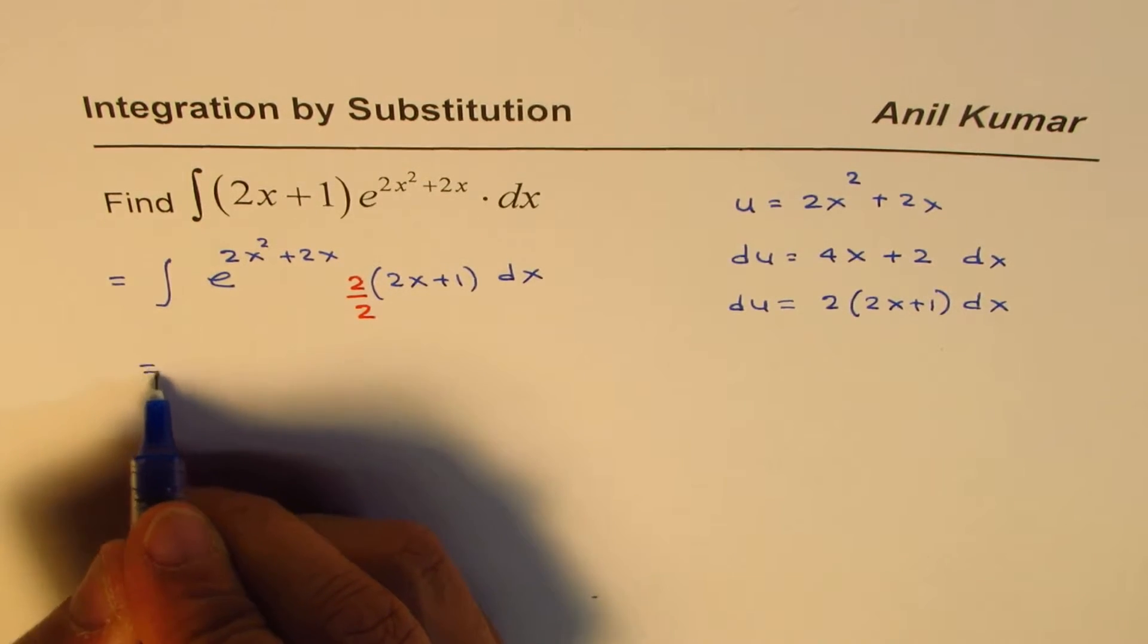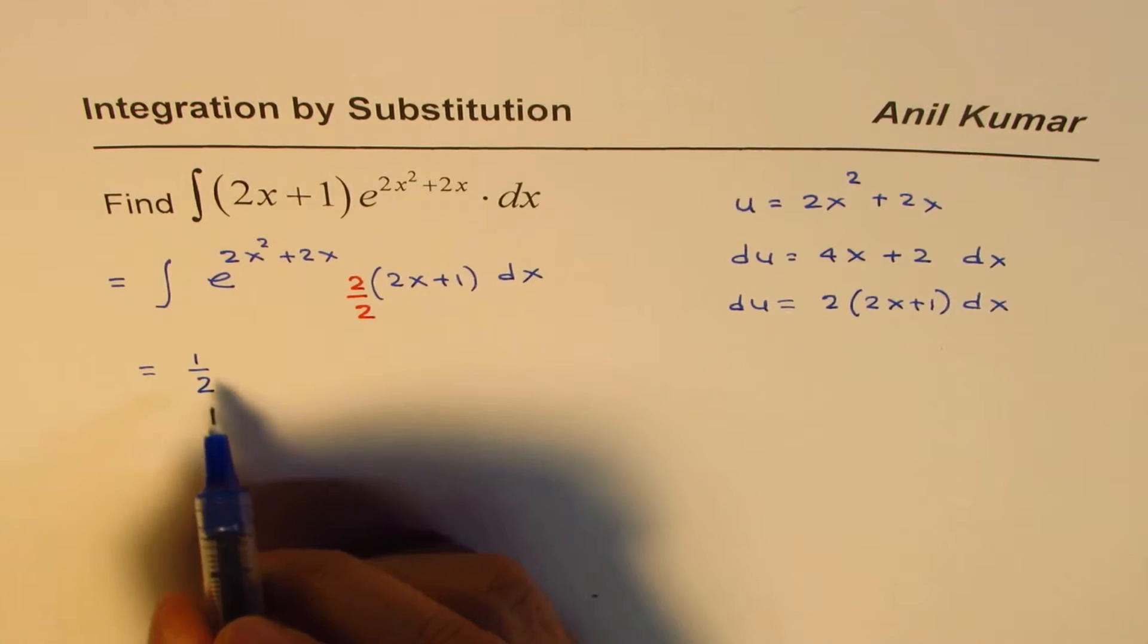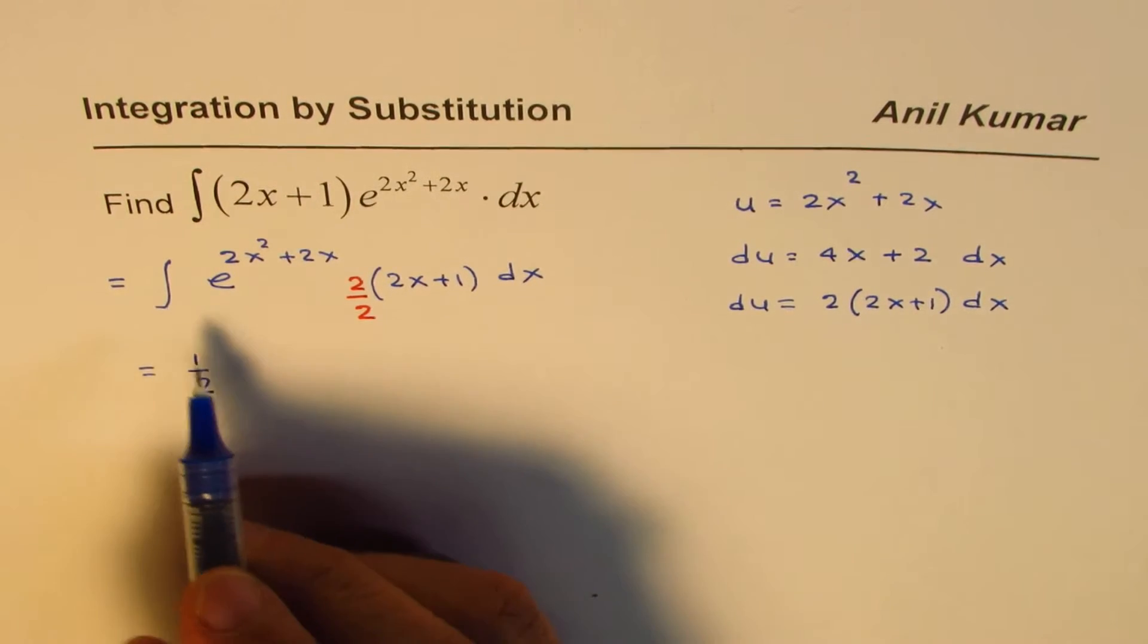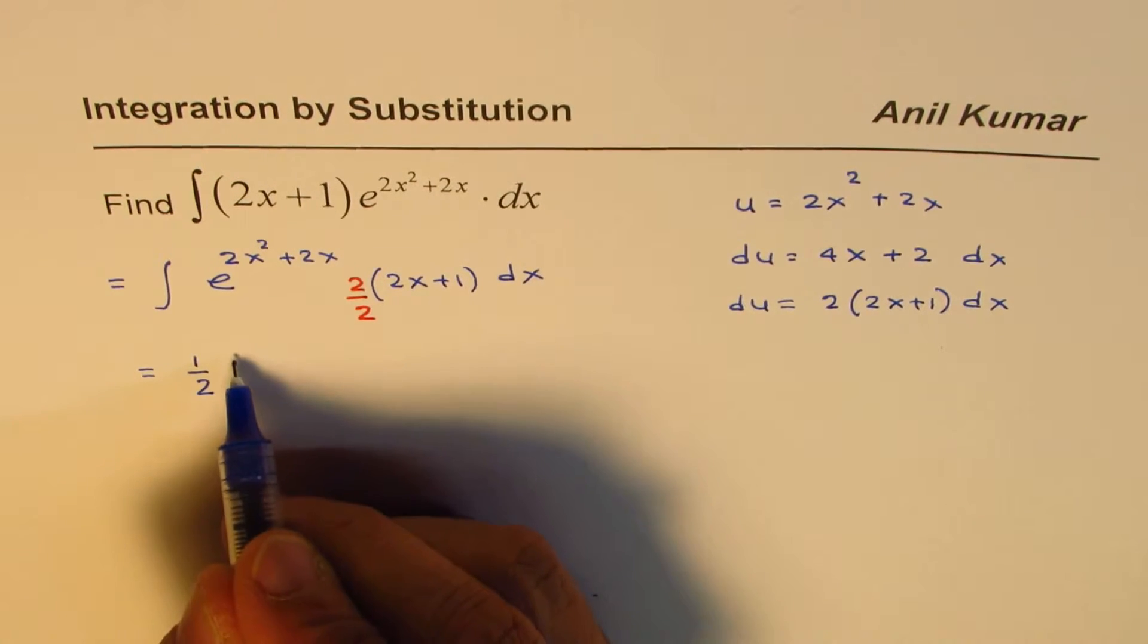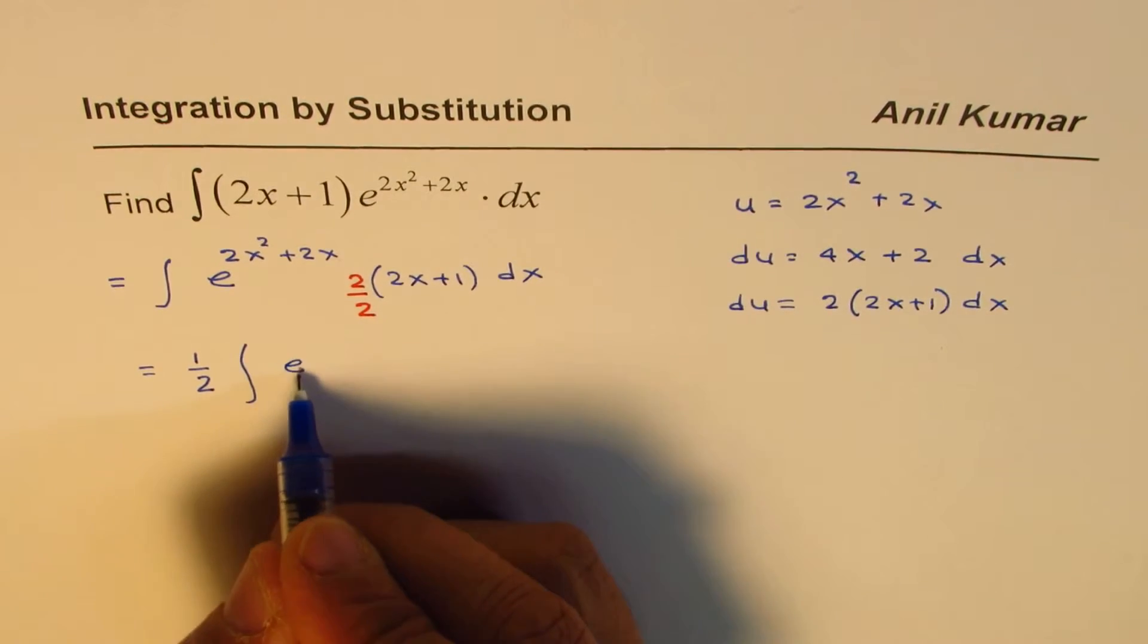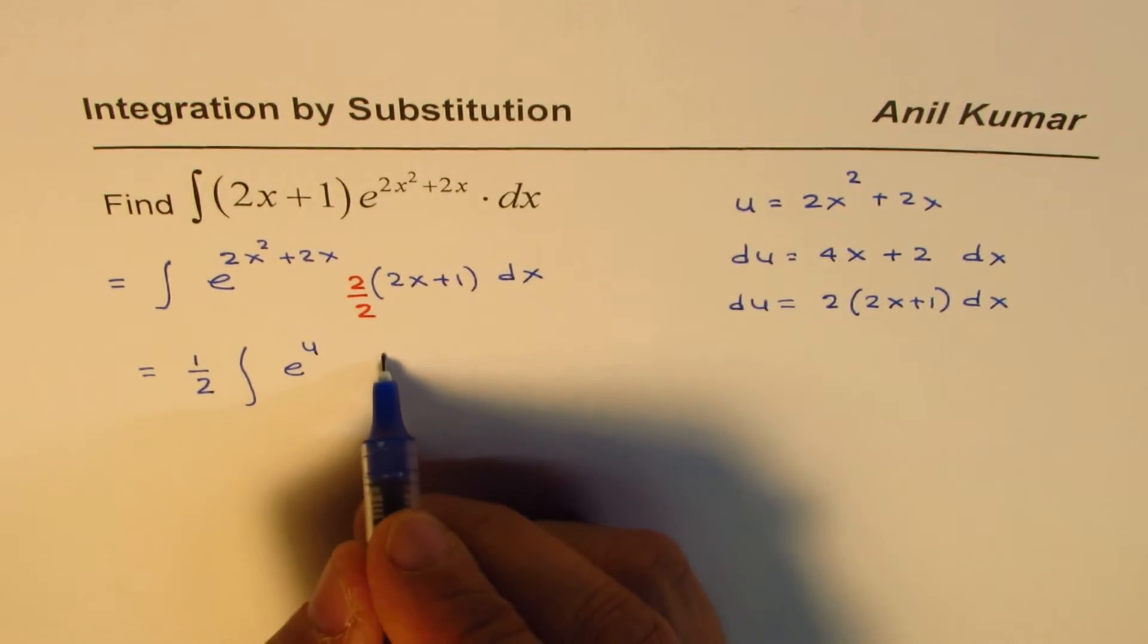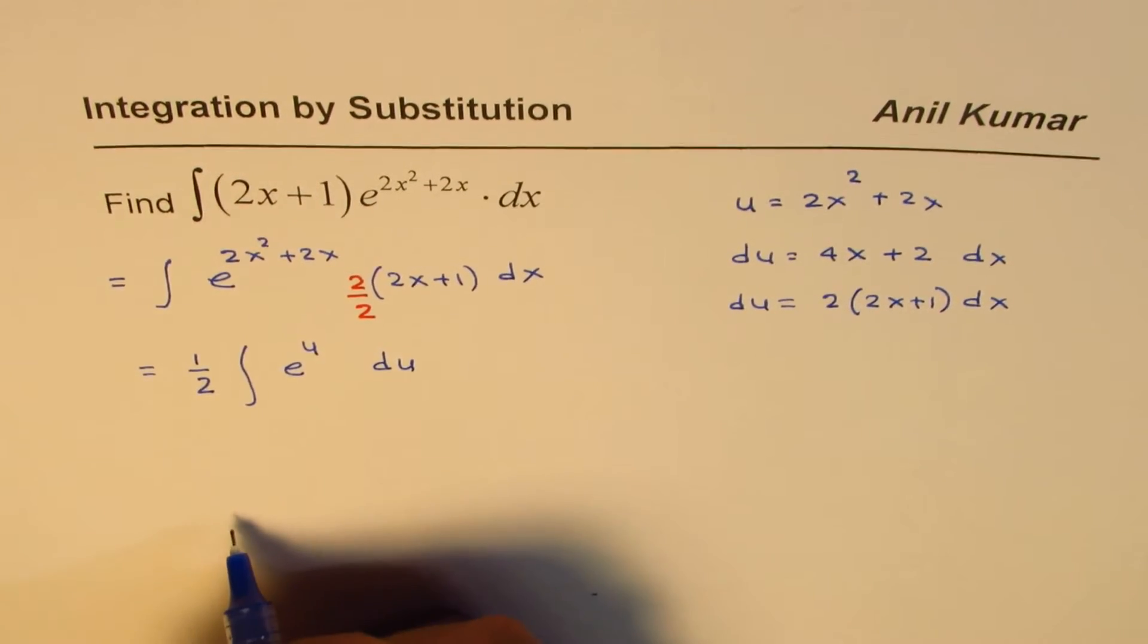Now we'll do the substitution. Taking this 2 outside, since it is a constant, applying the properties of integrals we get half. This portion e to the power of u we can write as e to the power of u, and 2 times this is du. So we get our integral.